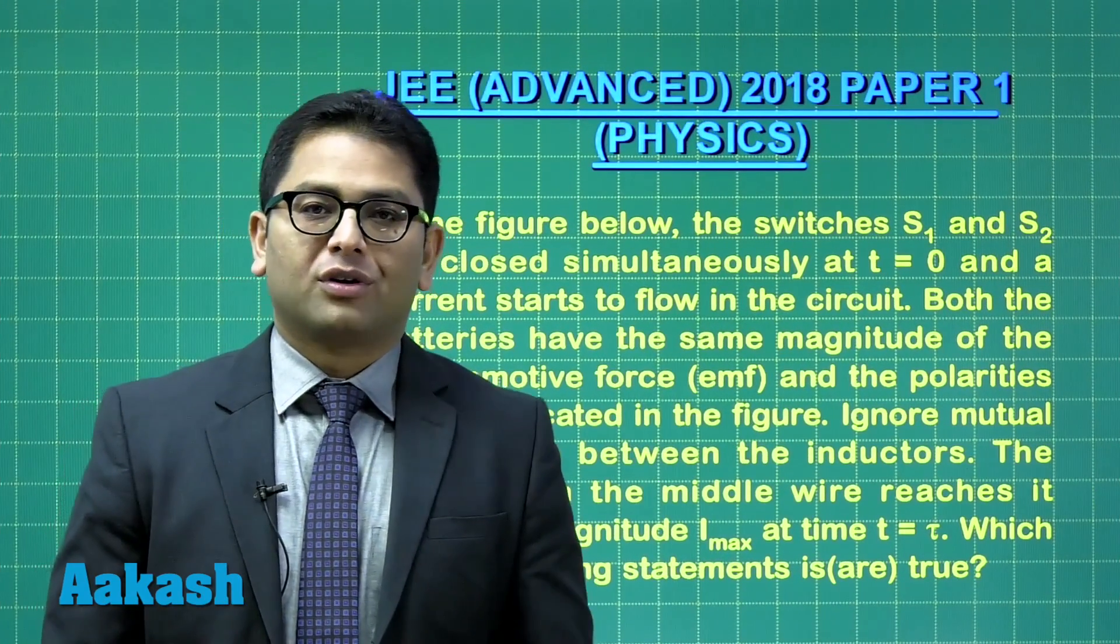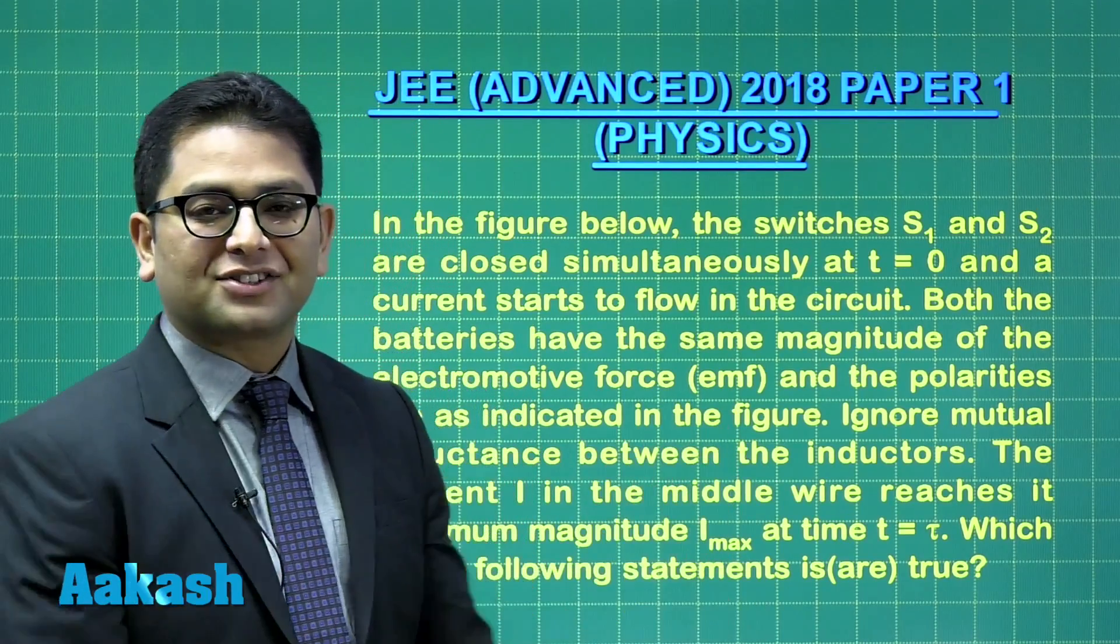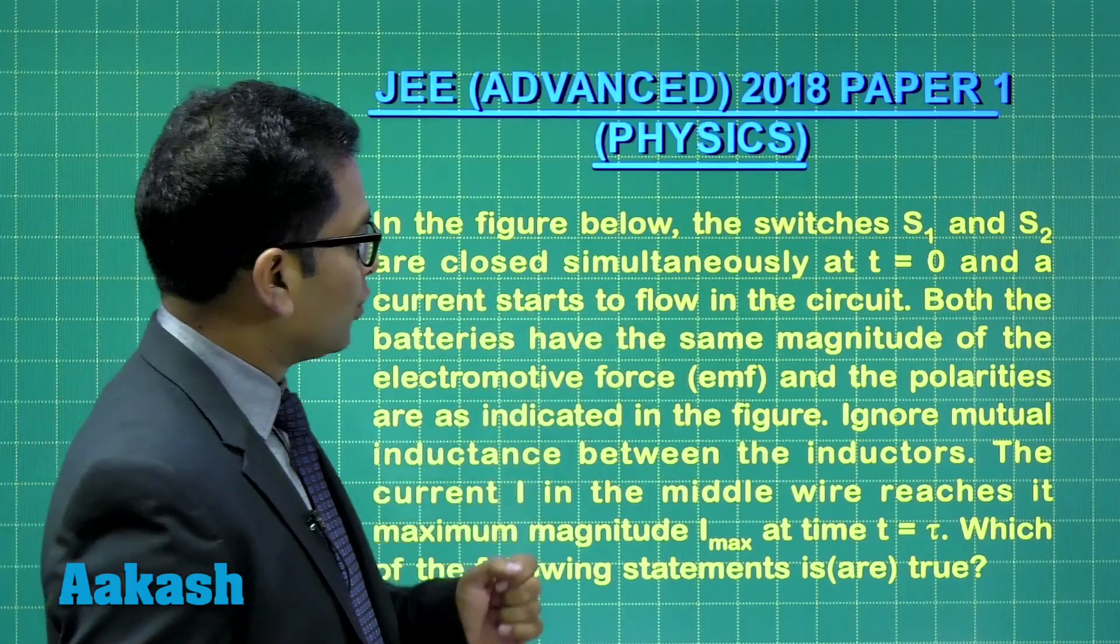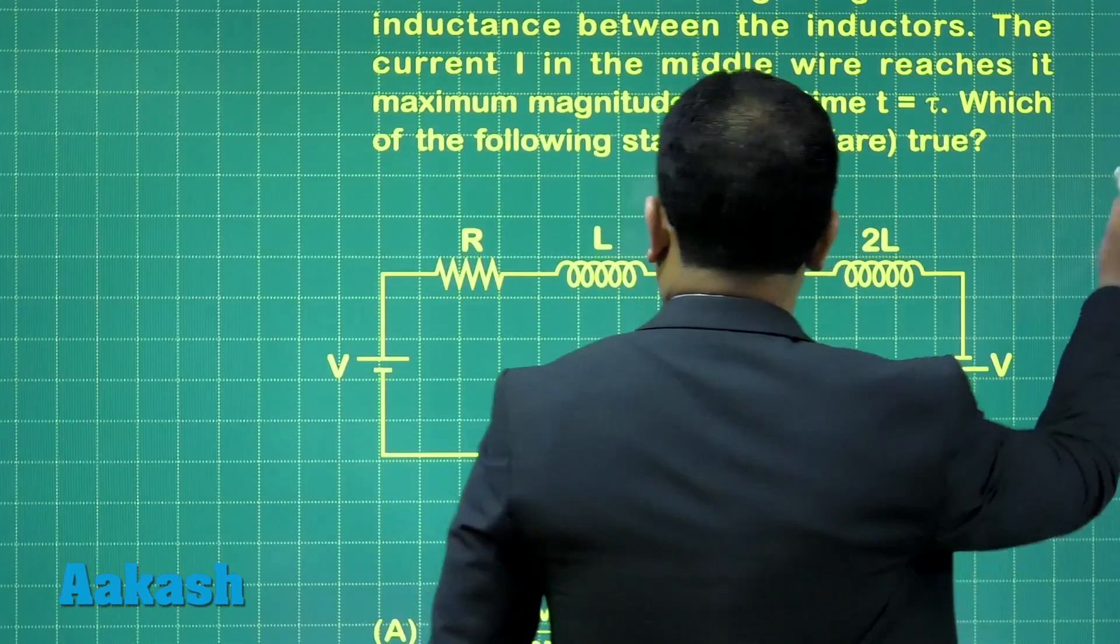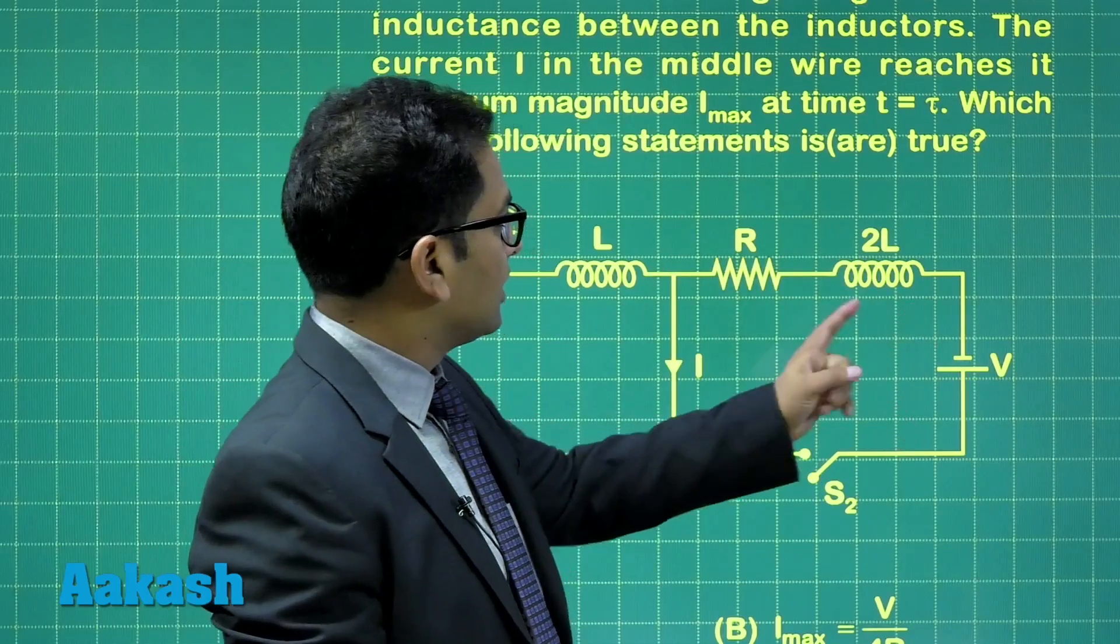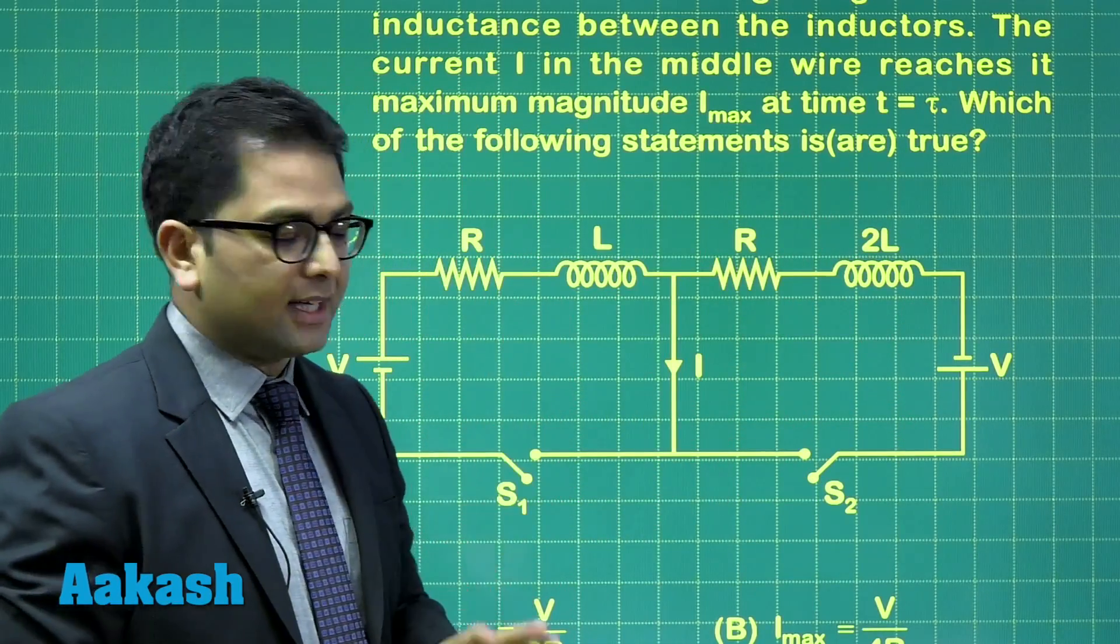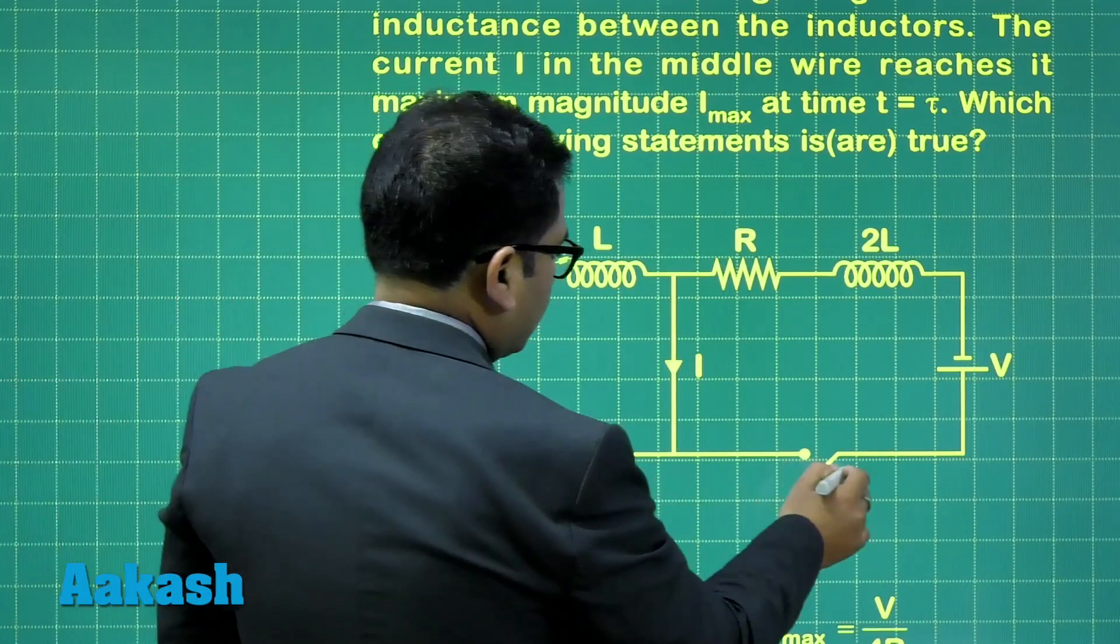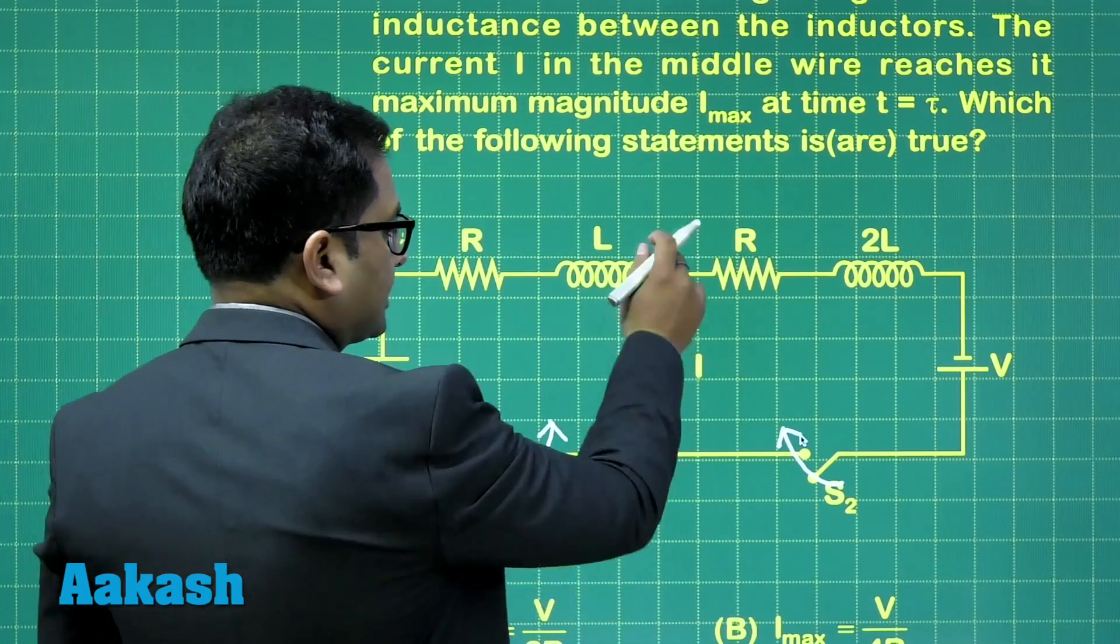Question number four is from electromagnetic induction, and specifically the RL charging discharging circuit. Let me show the figure because that's essential. Here's the figure. This is RL circuit one, RL circuit another. Notice R 2L and RL. Both the switches are closed at T equals zero, and I is the current through this branch.